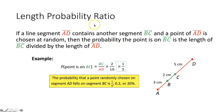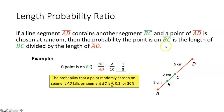Let's talk about the length probability ratio. This says: if a line segment AD contains another segment BC, and a point on segment AD is chosen at random, then the probability the point is on segment BC is the length of segment BC divided by the length of segment AD.